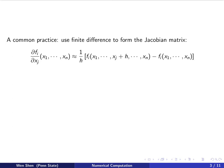So very often, the Jacobian matrix is not easy to find. A common practice is to use finite difference to approximate the derivatives, the partial derivatives, and form the Jacobian matrix.